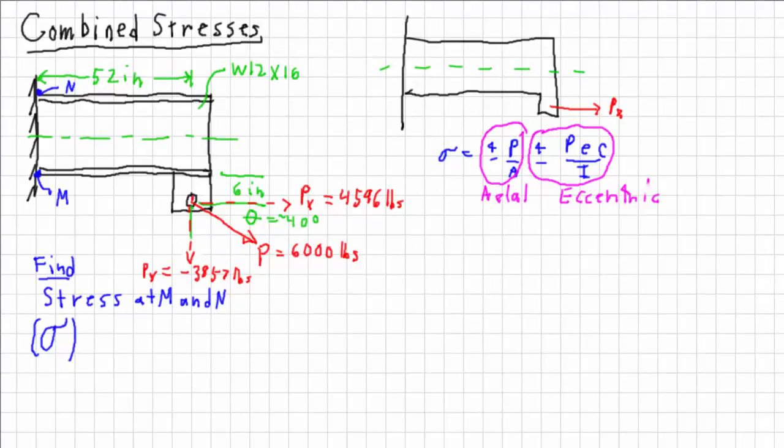I'm just going to calculate the force over the area first. Force over the area, the axial component, ends up being 976 PSI. Simply the force over the area, and I'm using the area of the W12 by 16, which you can look up in any standard reference.